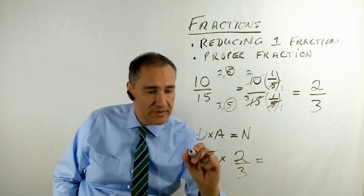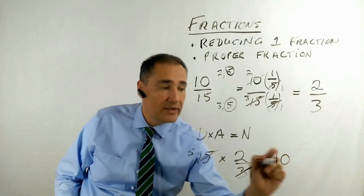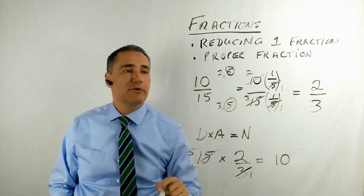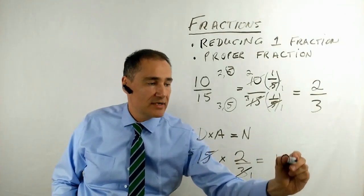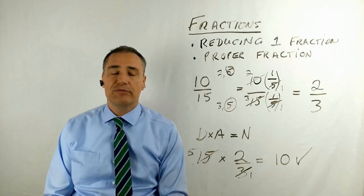So your denominator multiplied by your answer has to equal your numerator. So your denominator is 15. Your answer is 2 over 3. And your numerator, so 15 is divisible by 3, 5 times. That cancels this one.